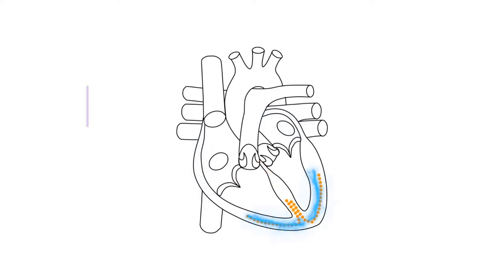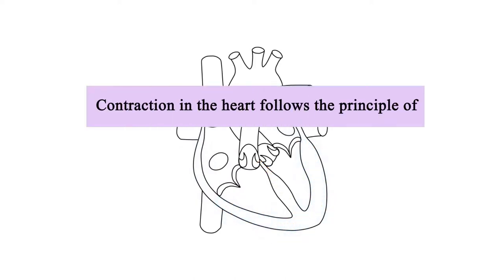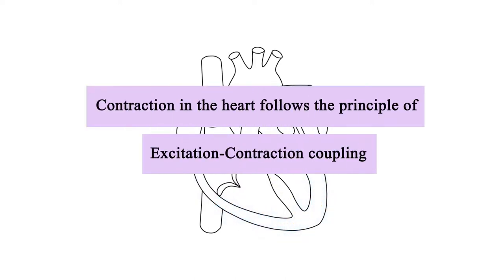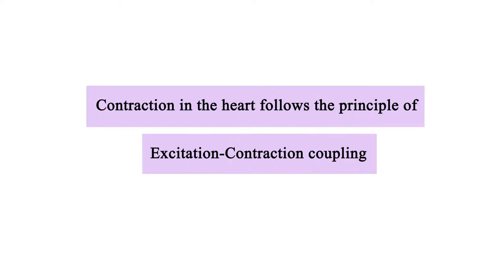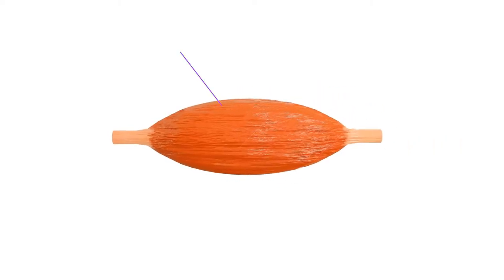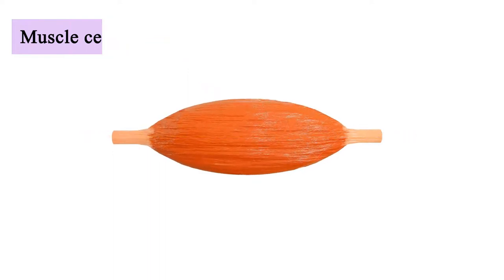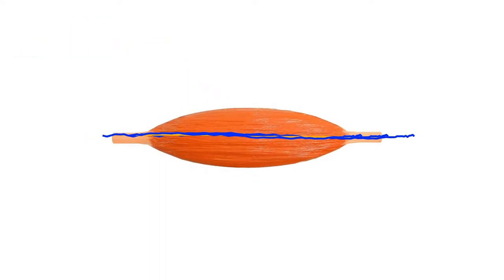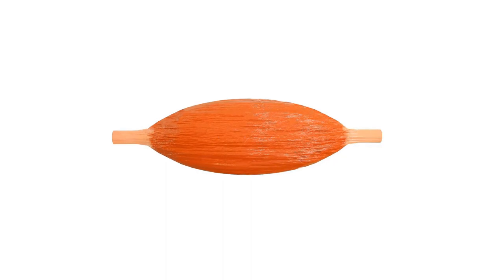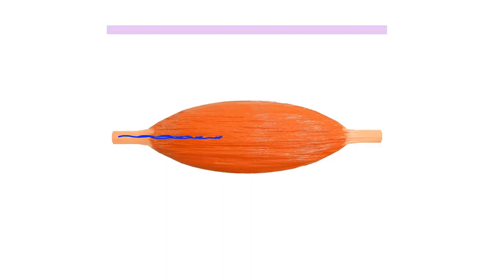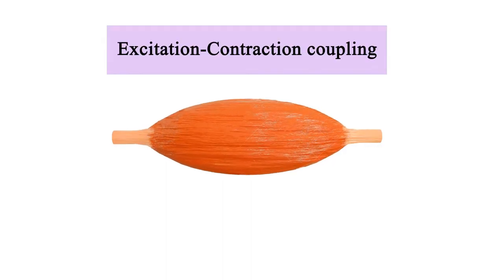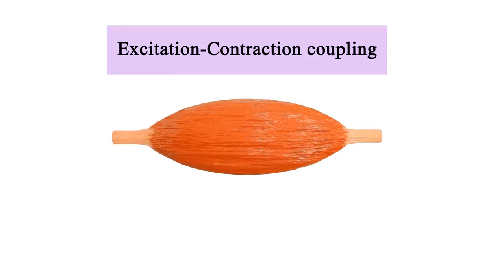Number 2: Contraction in the heart follows the principle of excitation-contraction coupling. When a muscle cell is electrically excited by an action potential, contraction of the myocytes follows immediately. This relationship between electrical excitation and muscle contraction is known as excitation-contraction coupling. Therefore, when a contractile cell in the heart receives an action potential, it contracts.